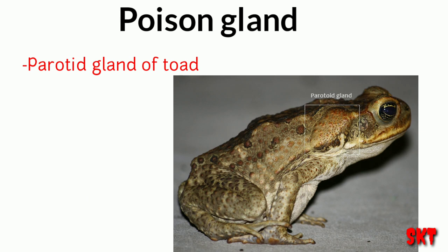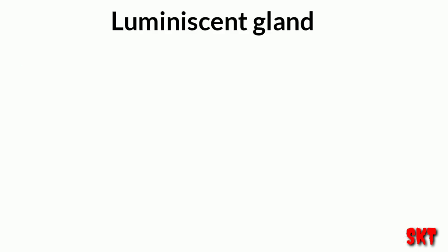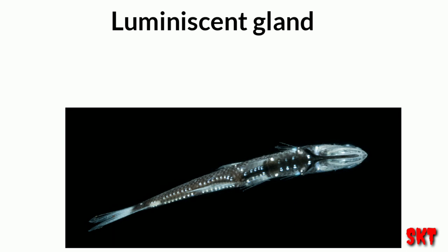The third one is the bioluminescent gland, which produces bioluminescent light in certain fishes and marine animals. This gland is also called photophores, which are present in lanternfish or pocket shark, etc.